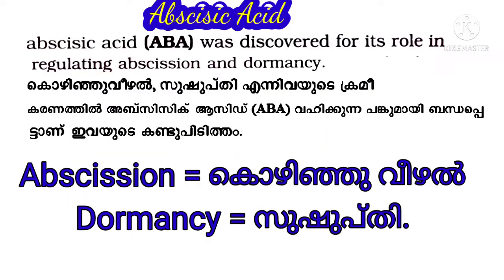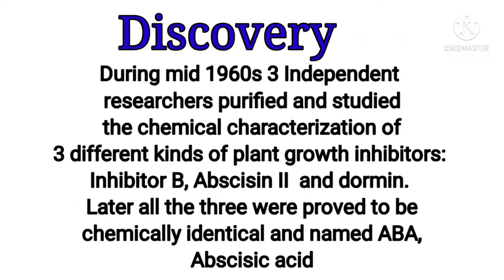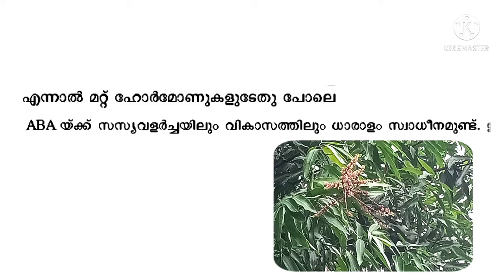Abscisic acid was discovered for its role in regulating abscission and dormancy. During the mid-1960s, three independent researchers purified and studied the chemical characterization of three different kinds of plant growth inhibitors: Inhibitor B, Abscissin-2, and Dormin. Later, all three were proved to be chemically identical and named ABA, abscisic acid.